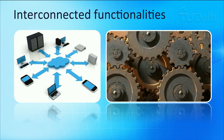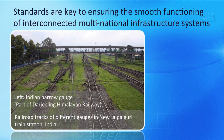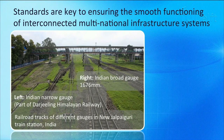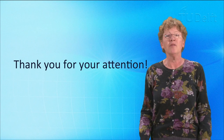This is only possible because the operators of all these different multifunctional communication networks agreed on interoperability standards. Also, within mono-functional infrastructure systems, such as railway systems and electricity infrastructure, interconnectivity and interoperability standards are key to ensuring the smooth functioning of interconnected multi-national infrastructure systems. In other words, this week's course material will show you the increasing complexity of infrastructure systems caused by expansion and interconnection across national borders and across the borders between infrastructure sectors.